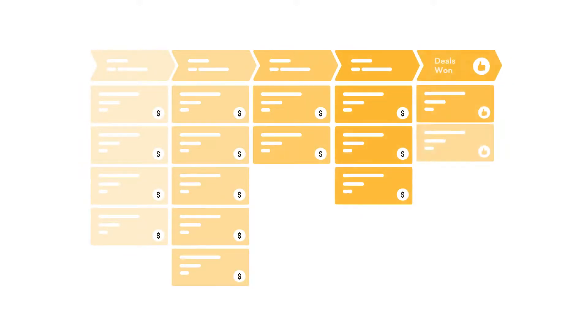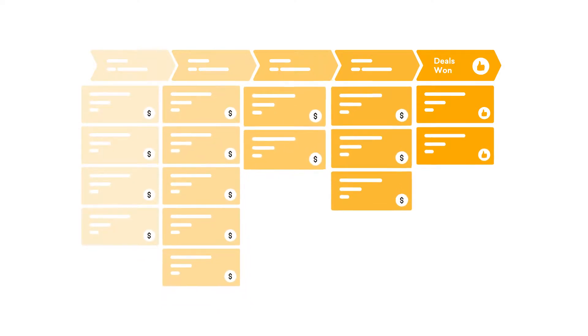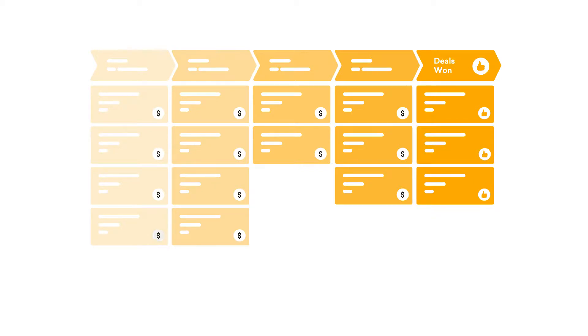Pipeline lets you manage, visualize, and track the progress of every deal. It gives a snapshot of the total number of opportunities you have. You can also determine how close you are to winning each deal and thus select the right deals and activities to focus on every month.